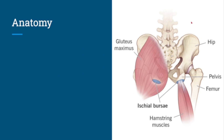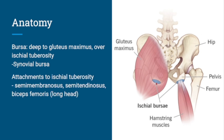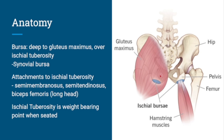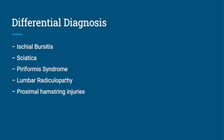Anatomically, this bursa is deep to the gluteus maximus muscle over the ischial tuberosity. It is a synovial bursa. The hamstring muscles — specifically the semimembranosus and semitendinosus, as well as the long head of the biceps — attach there. The ischial tuberosities are weight-bearing points when we sit down, which is why they are vulnerable to this condition. The differential diagnosis includes sciatica, piriformis syndrome, lumbar radiculopathy, proximal hamstring injuries, trochanteric bursitis, and malignancy.